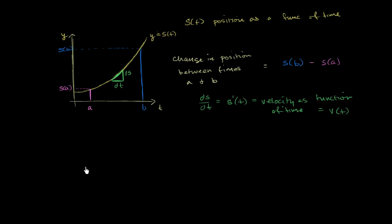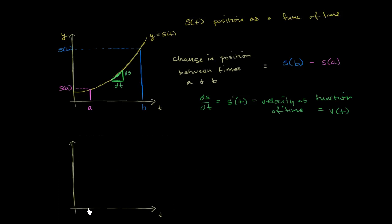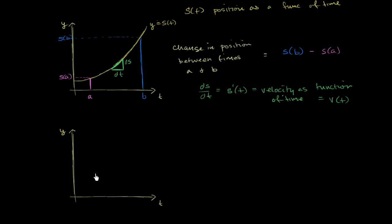Let's graph what v of t might look like. If this really is a parabola, then the slope over here is 0 — the rate of change is 0 — and then it keeps increasing; the slope gets steeper and steeper. So v of t might look something like this. This is the graph of y equals v of t.